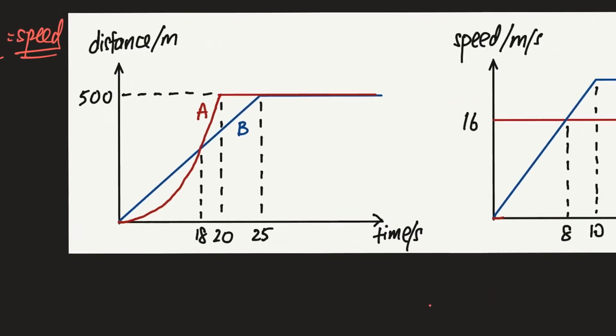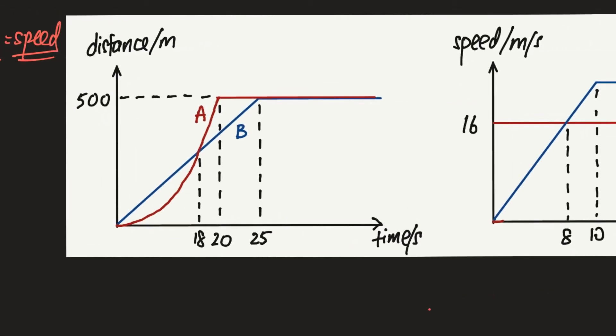Now let's give this graph a context. You can imagine that cyclists A and B are having a race, and both are at the starting point when time equals zero. There is a finishing line at a certain distance, so both will move differently until they reach the finishing line, where they will stop.